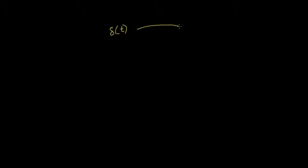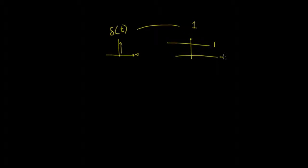In this video we're going to derive the Fourier transform of the sine and cosine functions using the impulse function. Remember the impulse function delta(t) - when we did the Fourier transform of it, it gave us a value of 1. So graphically, there's a delta(t) in the time domain, and in the frequency domain we get a value of 1 that just goes off to infinity in both directions.